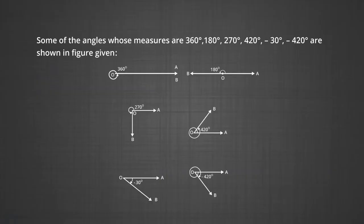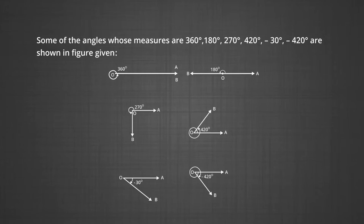Let us see how some of the angles look like. Some of the angles whose measures are 360 degrees, 180 degrees, 270 degrees, 420 degrees, minus 30 degrees which is moving in the clockwise direction, and minus 420 degrees which is moving in the clockwise direction — one complete circle and then another 60 degrees in the clockwise direction.